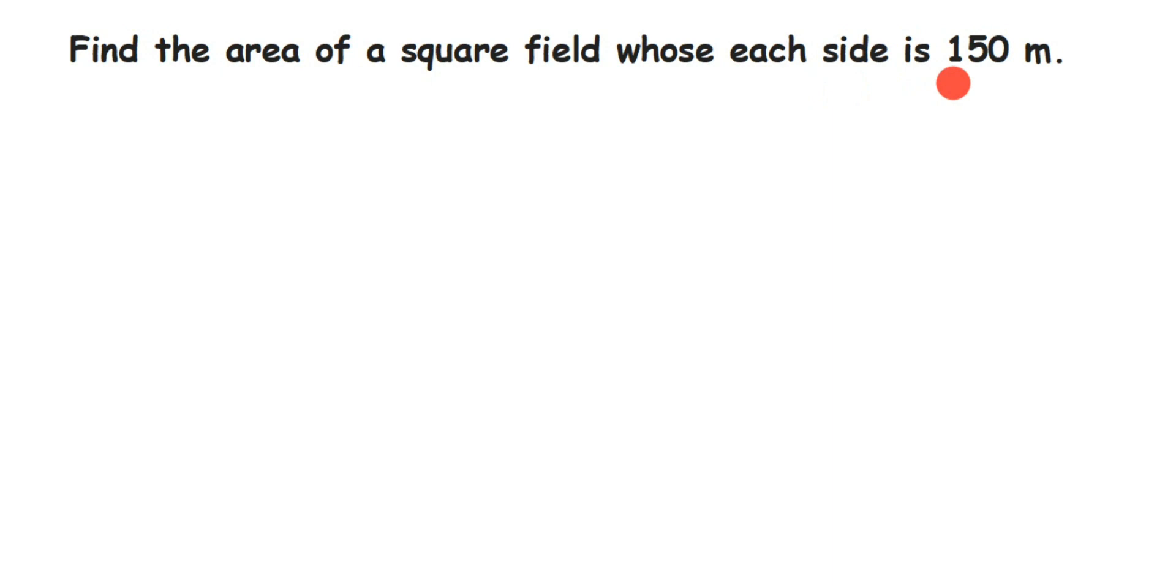What is given? There is a square field. A square is a polygon where all sides are of equal length. The side is 150 meters, so one side is given as 150 meters, which means all sides are 150 meters.